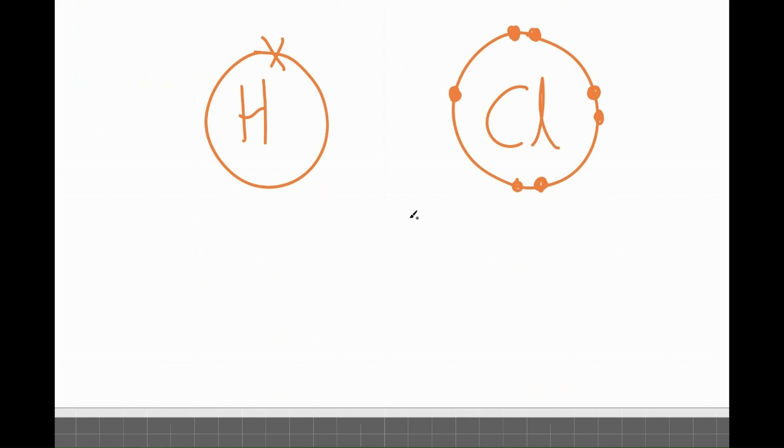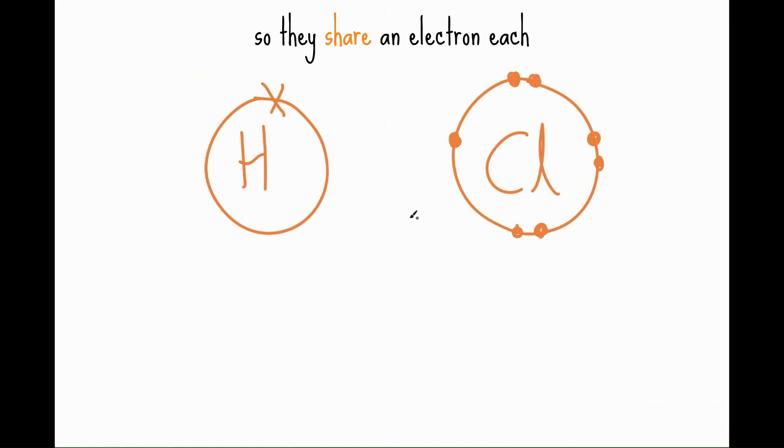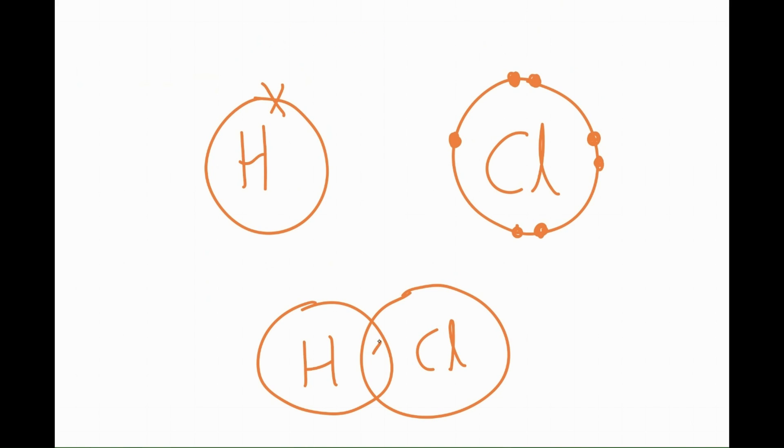So what happens is they share an electron each. So hydrogen's atom overlaps with chlorine's atom. And by sharing an electron each, they both achieve a full outer shell.